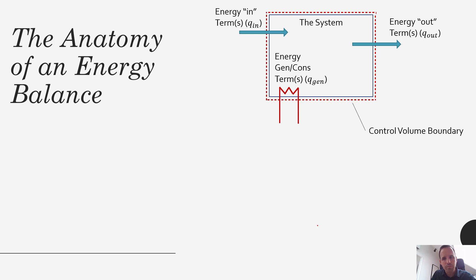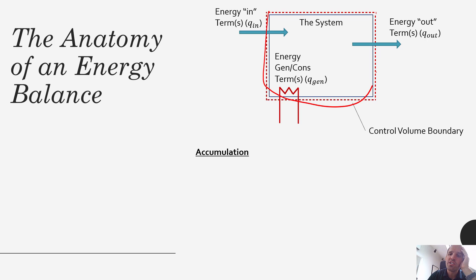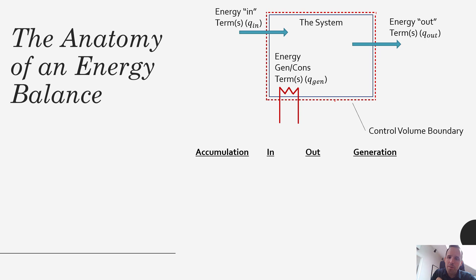When putting on our accounting hats, first we think about how energy is being accumulated in our system. The accumulation term deals with the total amount of energy in the system at any given time. We also have the in term, the out term, and the generation term. This form — accumulation, in, out, generation — is part of our accounting system: how much is being accumulated, how much is coming in and going out, and how much is being generated or consumed.